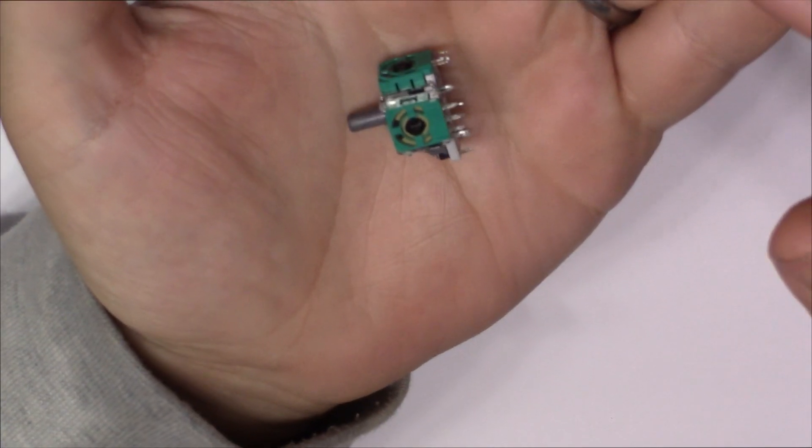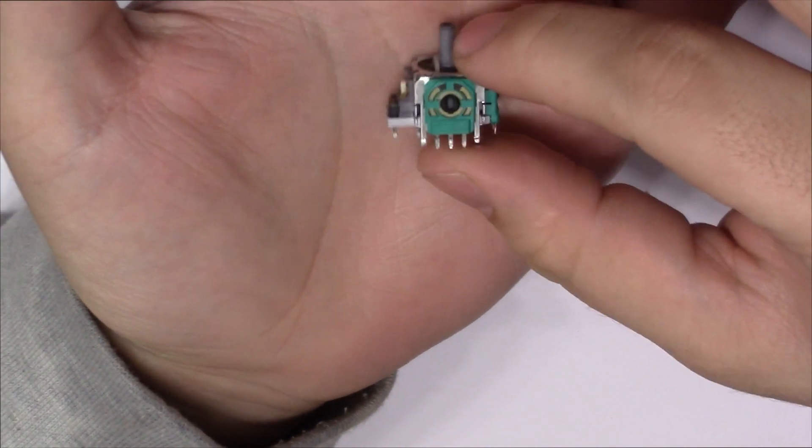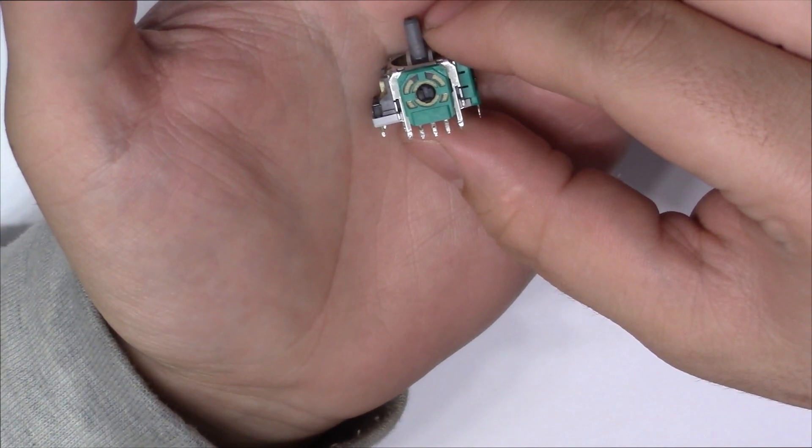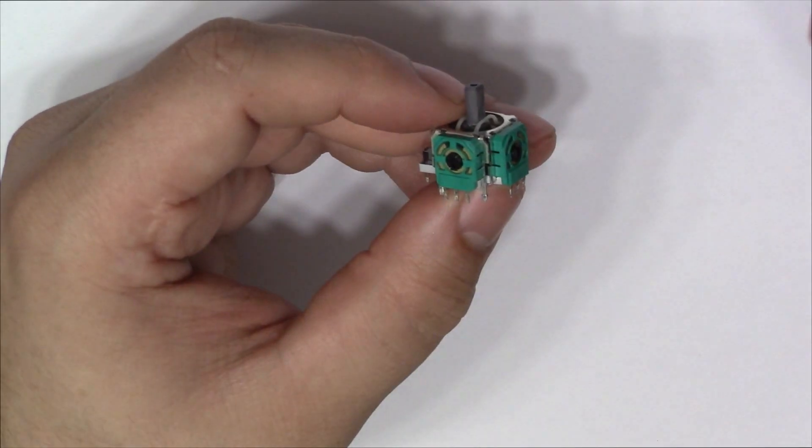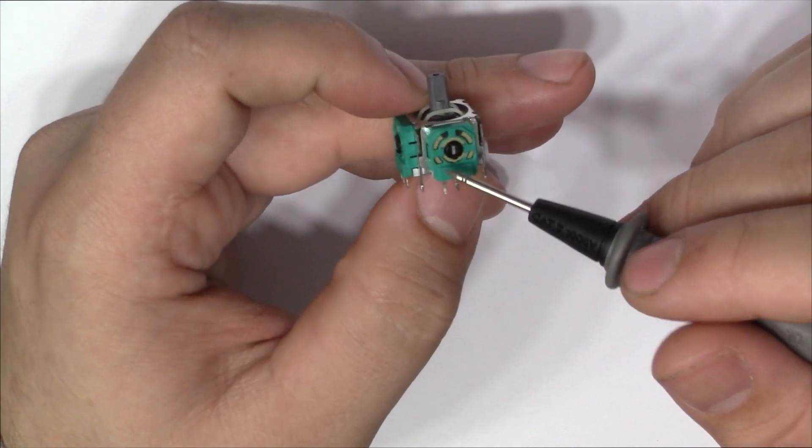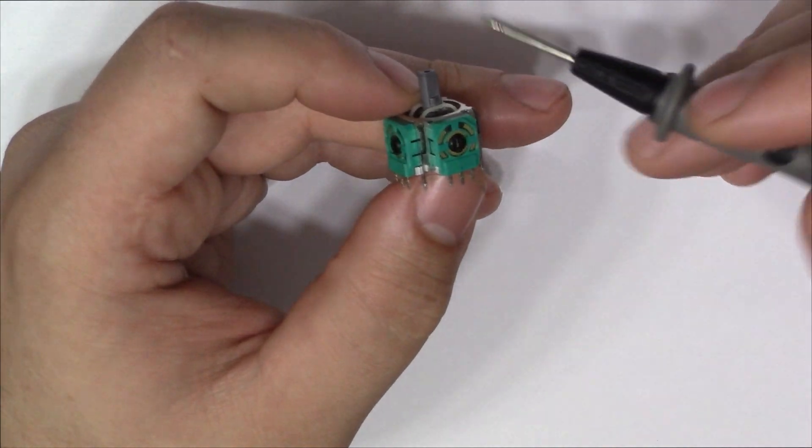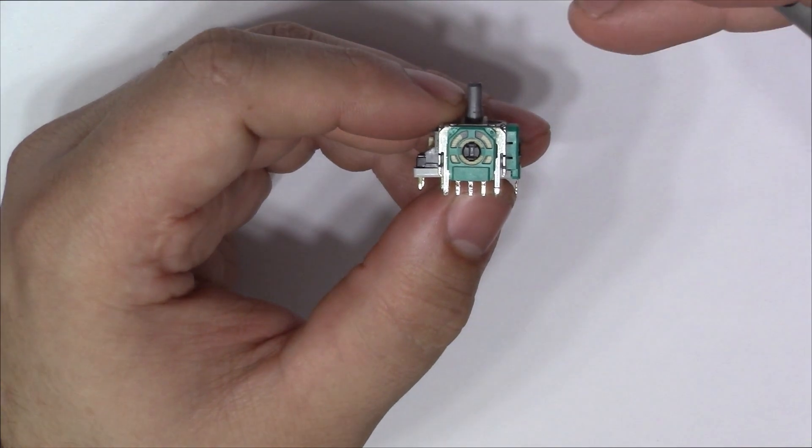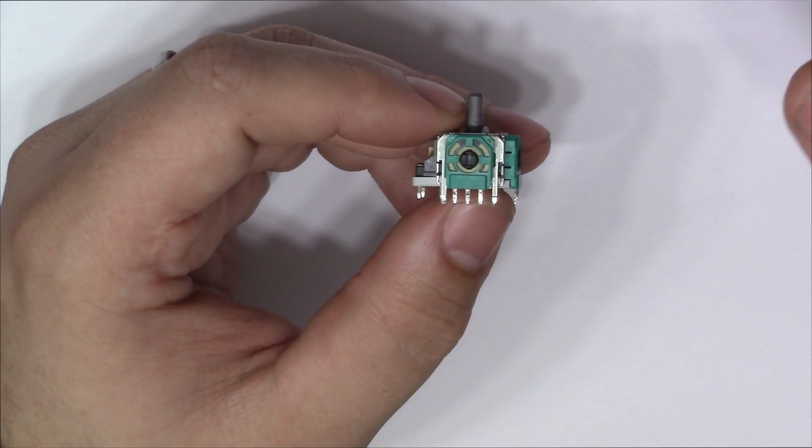Before I show you my idea on how to get rid of stick drift permanently, let's have a closer look at what an Xbox One analog stick actually is so we can better understand stick drift first. On the analog stick there are two potentiometers - this is a potentiometer right here and this is a potentiometer right here, or pot for short. To better understand stick drift, we have to know how a potentiometer works and what role it plays in stick drift.